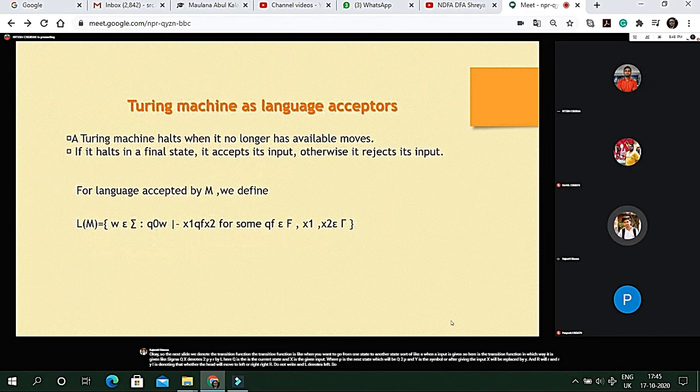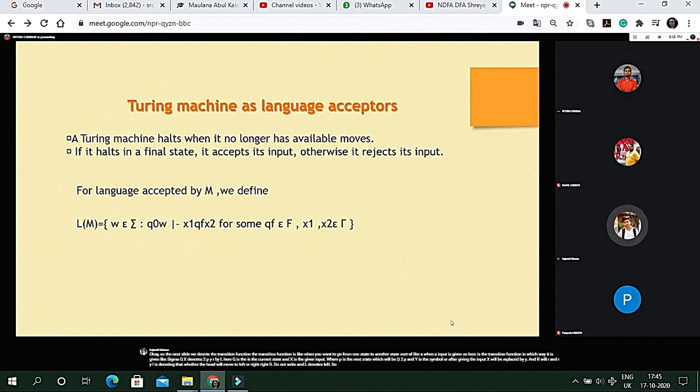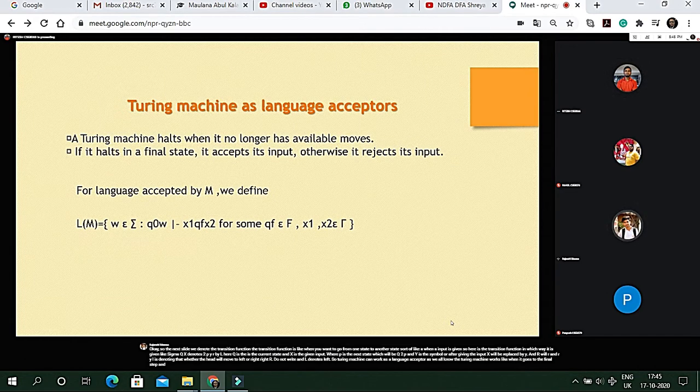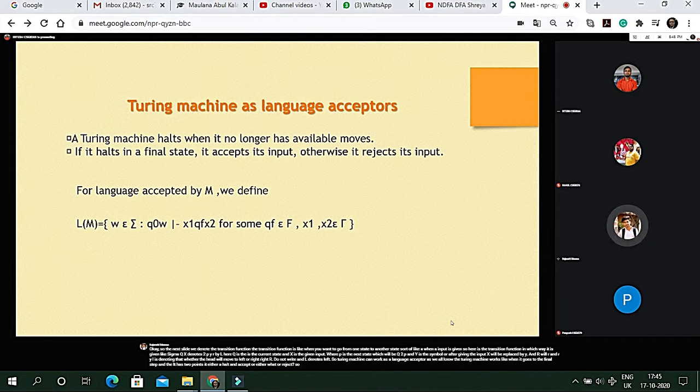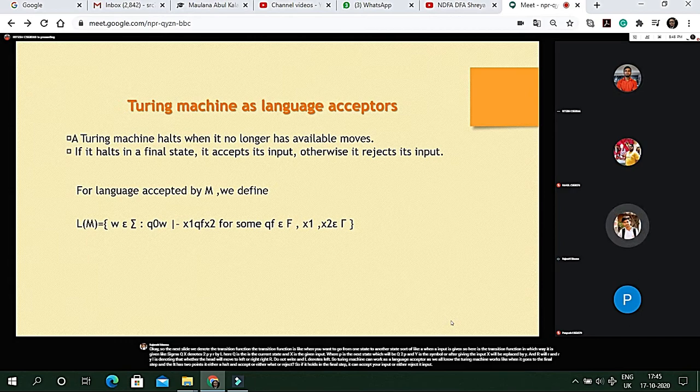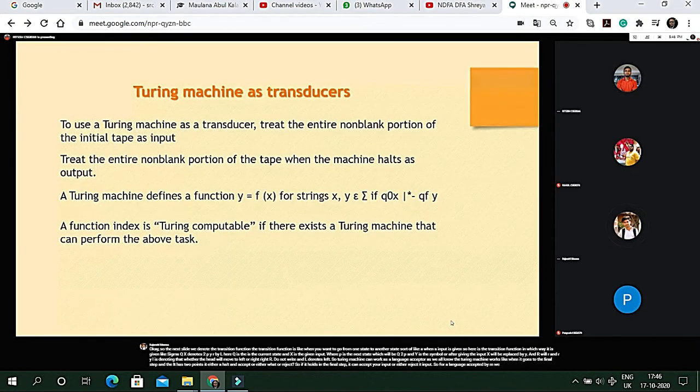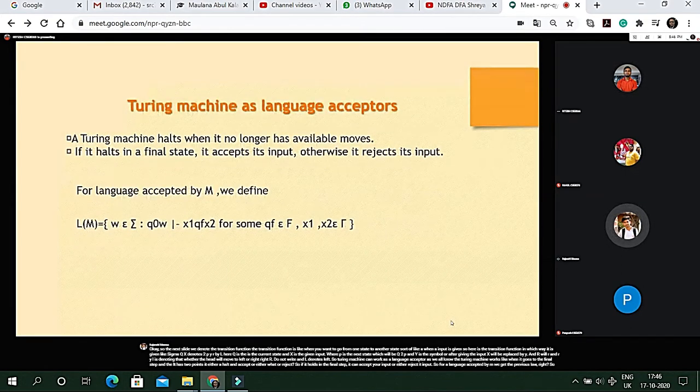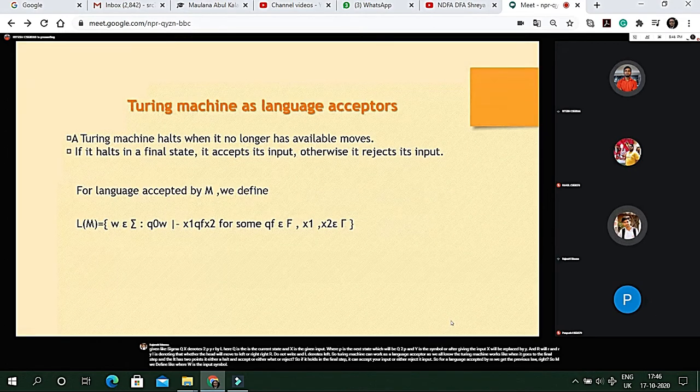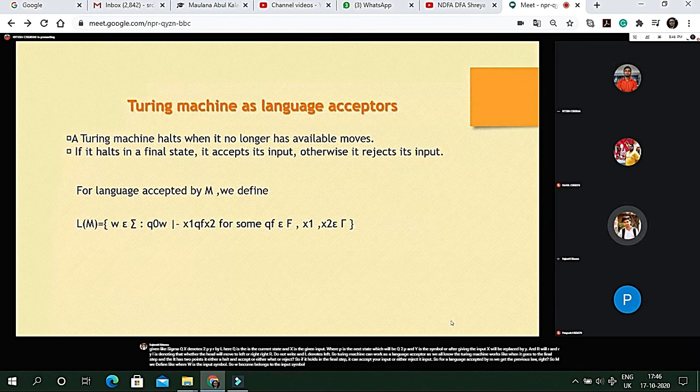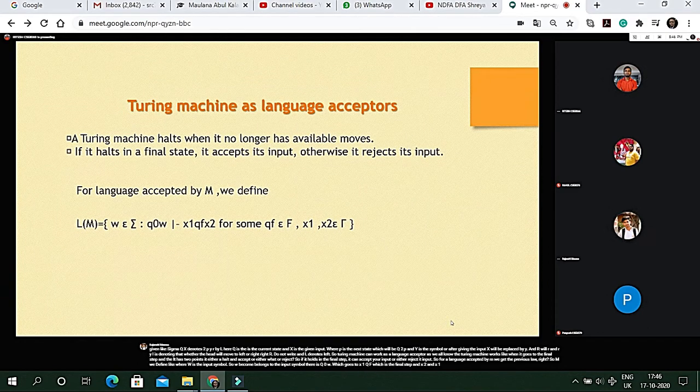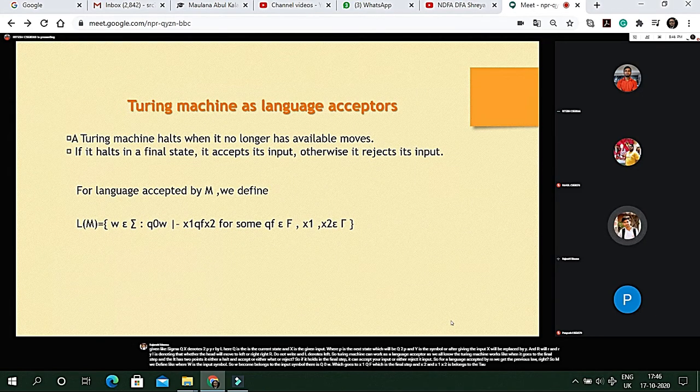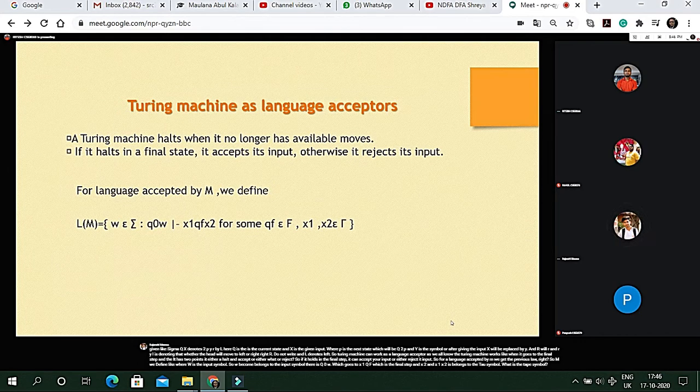Turing machine can work as a language acceptor. As we all know, the Turing machine works like when it goes to the final state and it has two points. It either halt and accept or either halt or reject. So if it halts in the final state, it can accept its input or reject its input. For a language accepted by M, we define M where W is the input symbol. W belongs to the input symbol. There is Q0W which goes to X1 QF which is the final state and X2, and X1 X2 belongs to the tau symbol, the tape symbol.